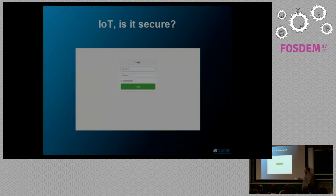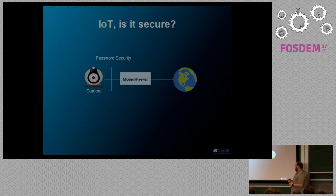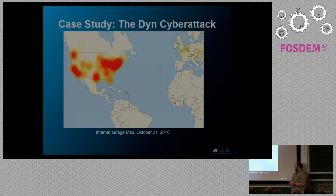Moving on to Internet of Things — is it really secure? Most consumer devices will have a login page, and probably about 90% of the ones out there you could log into with 'admin admin'. This is a bit of an issue. I'm sure many of you are aware of the DDoS attack that happened back in October — that's a heat map of what we're looking at — which was primarily done by malicious code on IoT devices that were insecure. This was the largest denial-of-service attack to date, and these will probably be more frequent if nothing is done to secure that end.